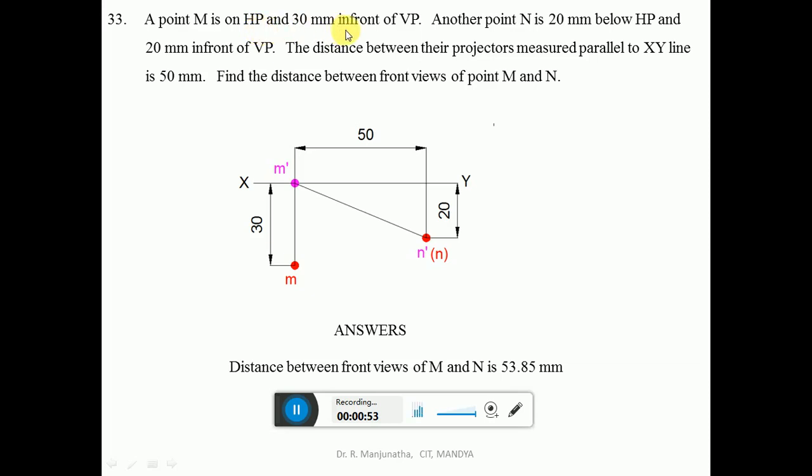M is 30 mm in front of VP. In front of VP will come below X, Y line. From here you measure 30 mm and draw your vertical projector and mark that point as small m.